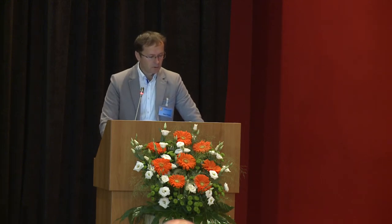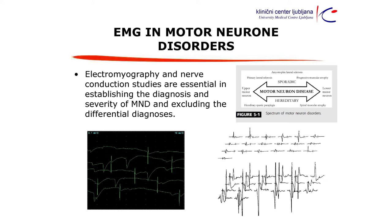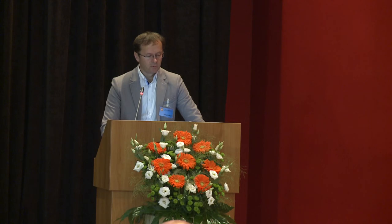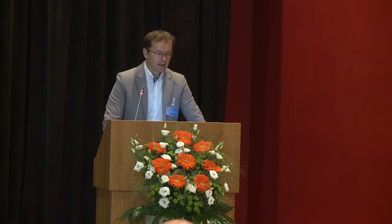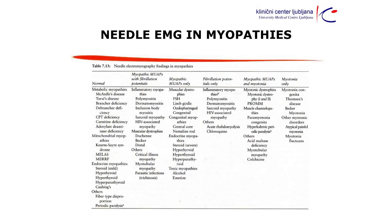For motor neuron disorders, we need findings from both nerve conduction studies and EMG to establish the diagnosis. These can be sporadic or hereditary, with predominant upper or lower motor neuron involvement. We find denervation activity and neurogenic changes. For myopathies, some have completely normal EMG; others show myopathic changes with fibrillation potentials; others show myopathic or motor neuron potentials only; and in myotonia we see myotonic discharges with myopathic changes.